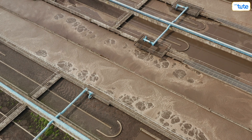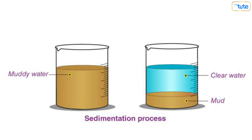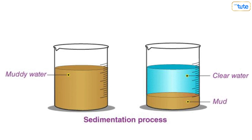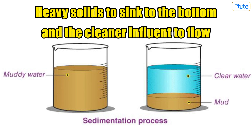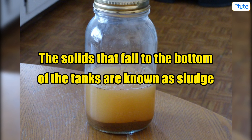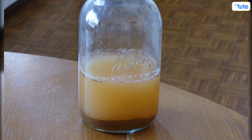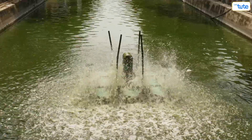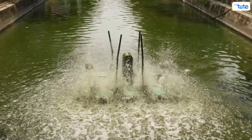The third step is called sedimentation. It is a process of settling after grit removal — the influent enters large tanks that allow the heavy solids to sink to the bottom and cleaner influent to flow. The solids that fall to the bottom are known as sludge and are pumped out regularly. The sludge is then discarded after all the water is removed and is commonly used as fertilizer.